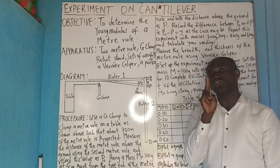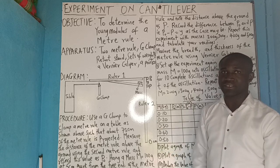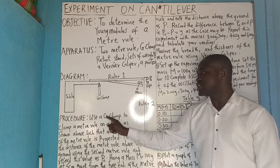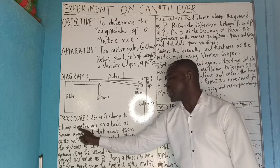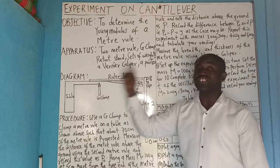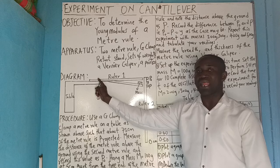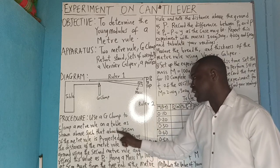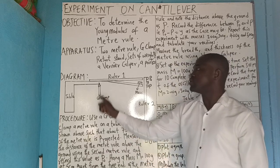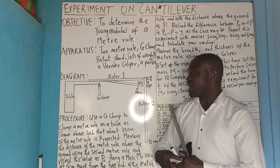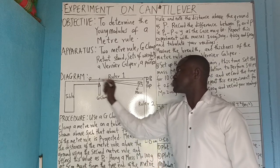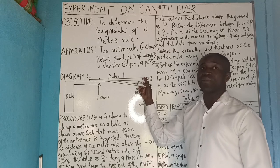We need two meter rules to embark on this experiment. Use a G-clamp to clamp one meter rule such that about 25 cm is inside the clamp, leaving 75 cm projecting outward as the free length.